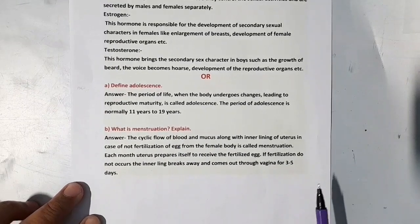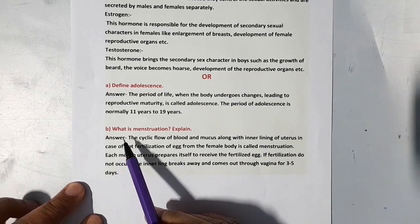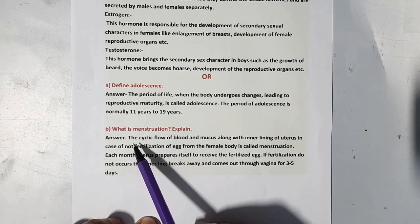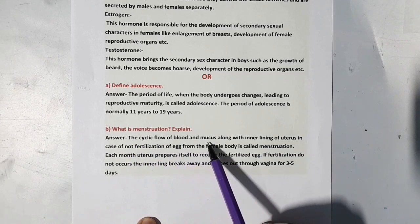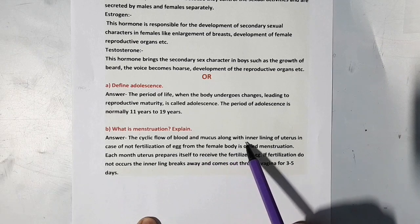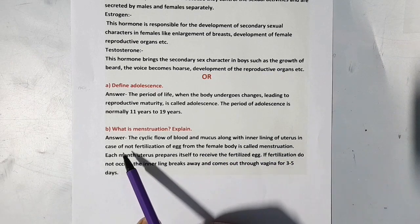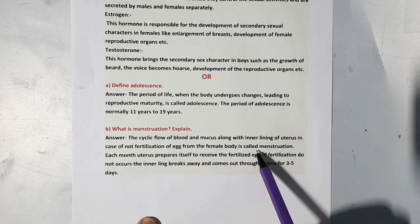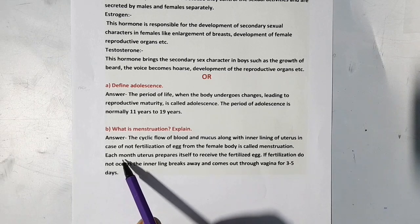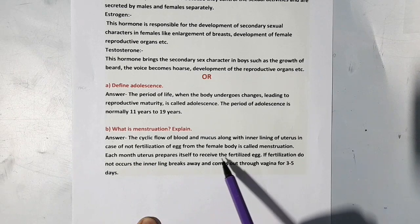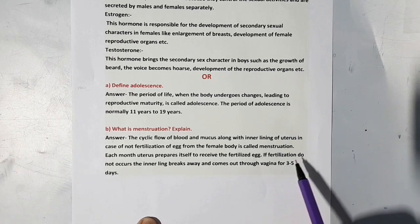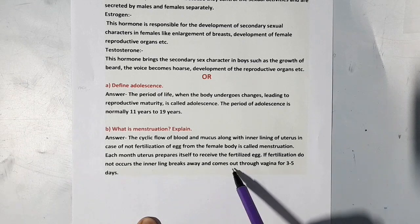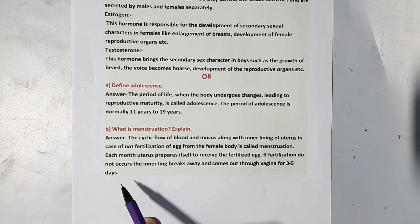Our next question is what is mensuration? Explain. The cyclic flow of blood and mucus along with inner lining of uterus in case of not fertilization of egg from the female body is called mensuration. Each month uterus prepares itself to receive the fertilized egg. If fertilization does not occur, the inner lining breaks away and comes out through vagina for 3-5 days.